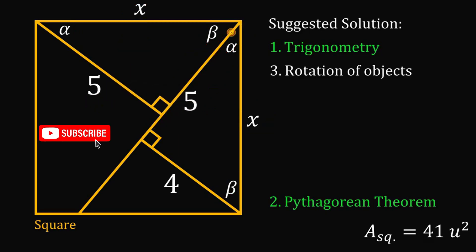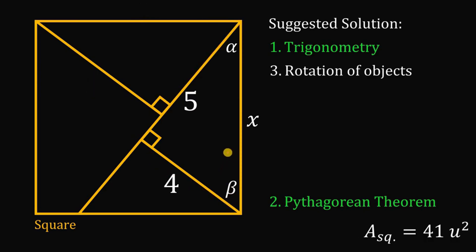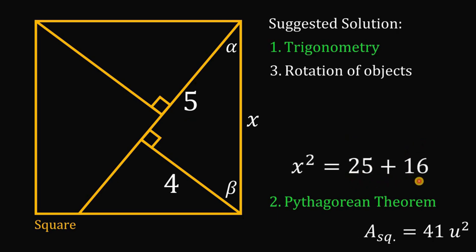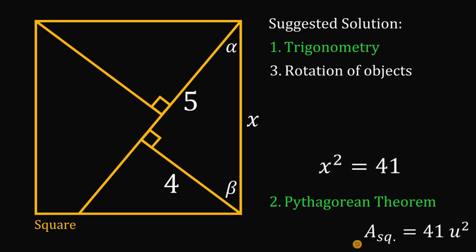Let's focus on this right triangle and apply the Pythagorean theorem. We have side lengths 4, 5, and x. So x² = 5² + 4² = 25 + 16 = 41. Again, that is the area of the square. So the area of the square is 41 square units.